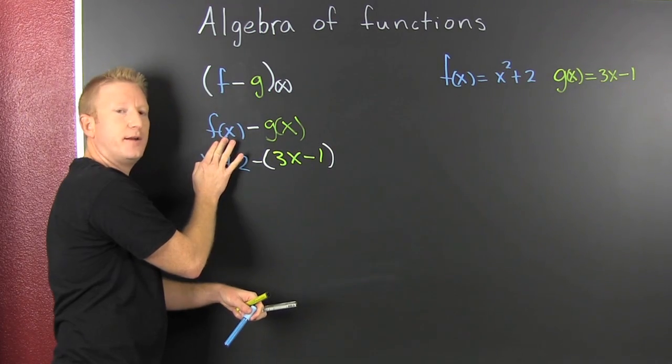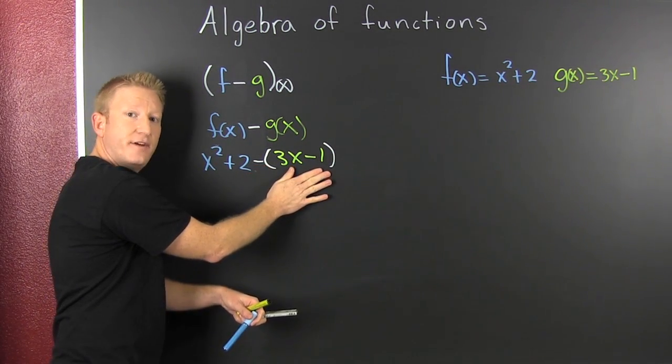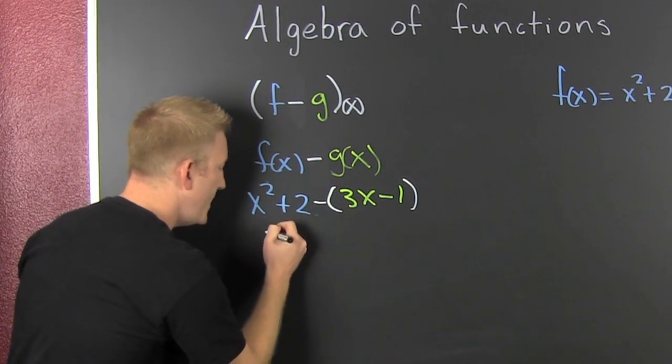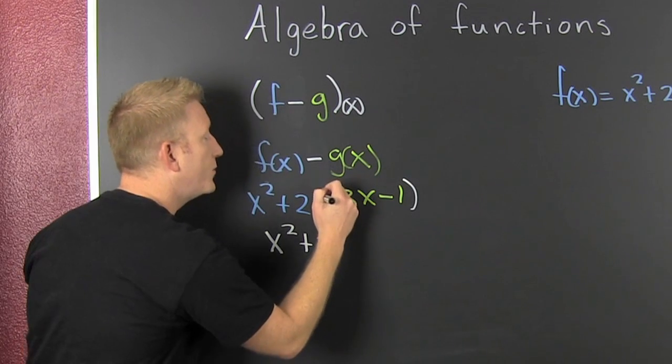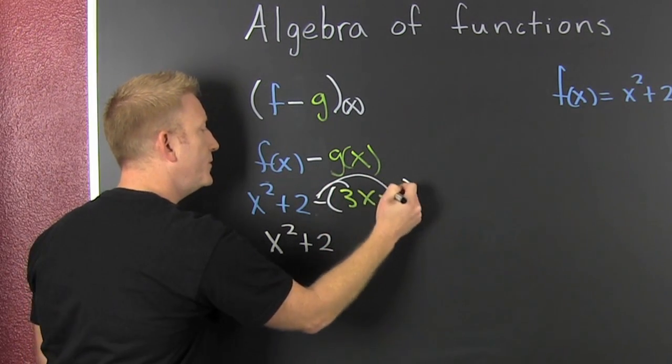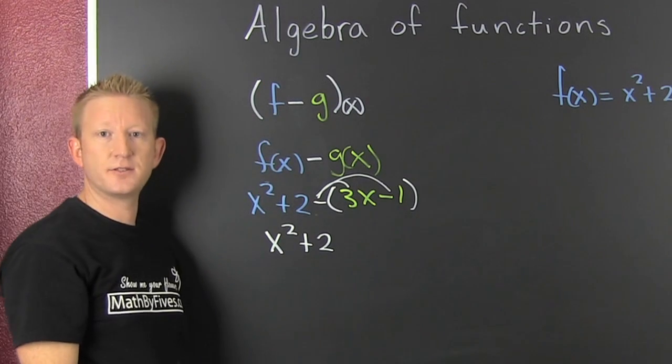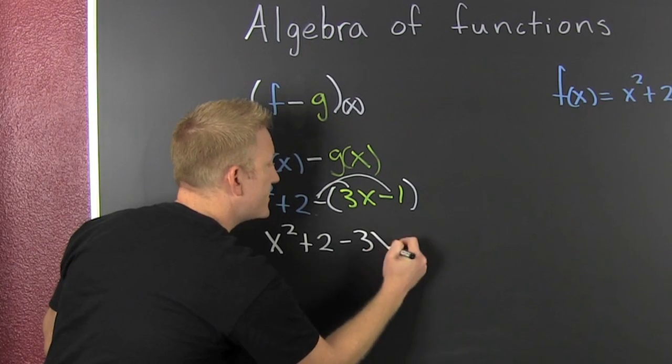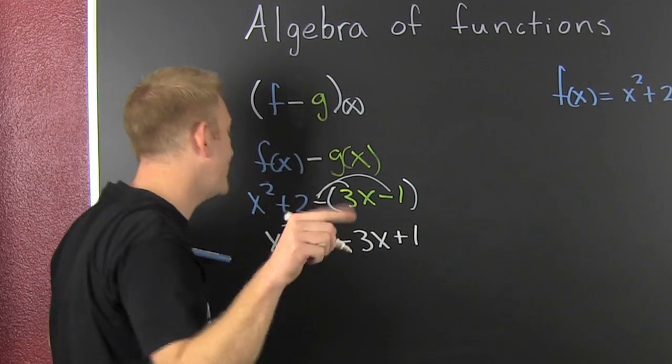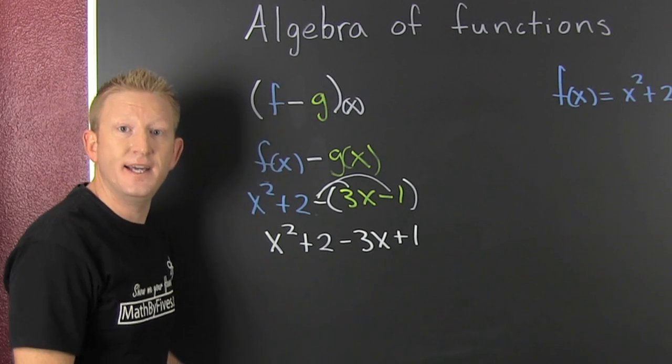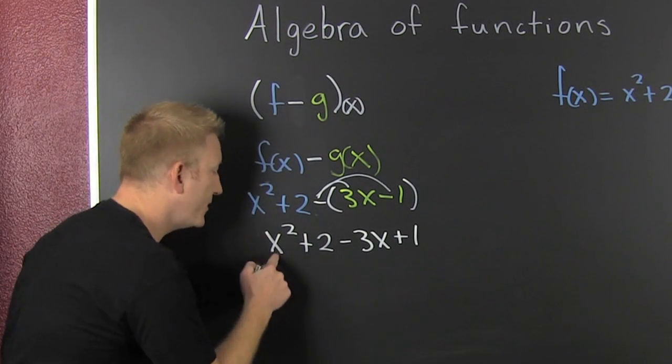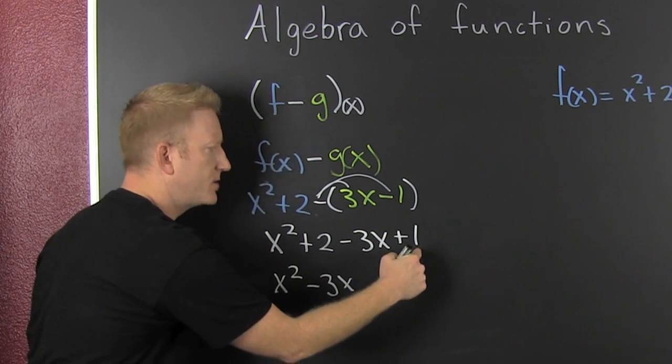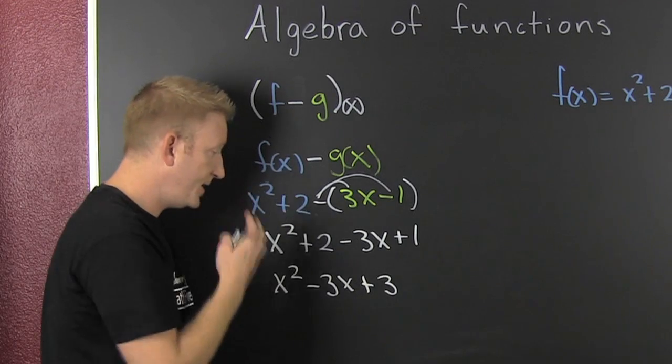Because I'm subtracting that polynomial from that polynomial, I need to take the opposite of everything in here. So that's an x² + 2, and it goes—and it actually makes that sound so you don't forget to take it to both terms in that binomial. So that's a -3x and a +1. Gather, collect, and combine, and we're gonna find we have x² - 3x. What's next? 1 and 2, that'd be 3.